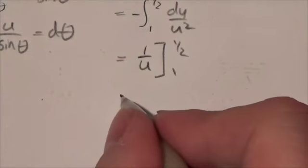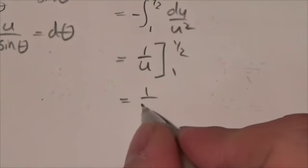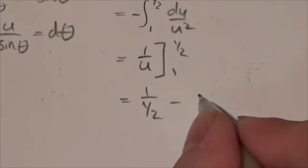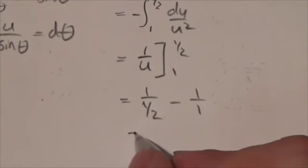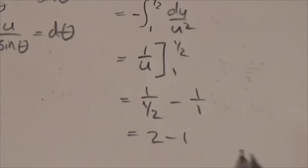And so that means I'm going to get 1 over 1 half minus 1 over 1. Or in other words, 2 minus 1 or just 1.